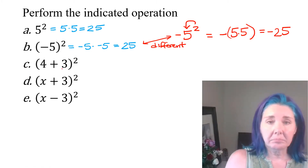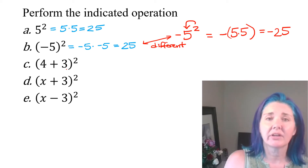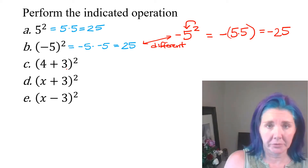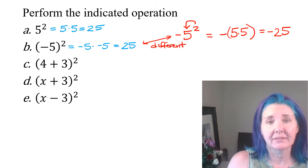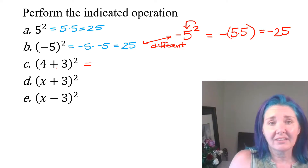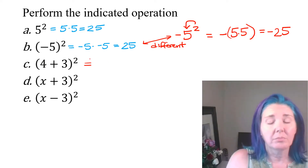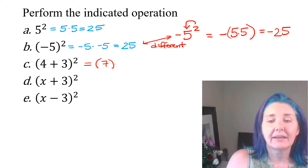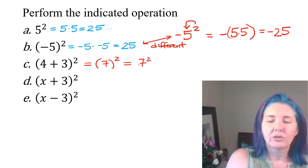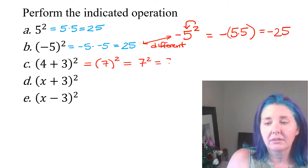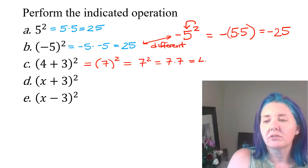All right, now let's look at part C. In part C, the parentheses are acting as a grouping symbol. Whatever's happening inside the parentheses needs to be done first. Inside the parentheses we have addition, so we need to add four and three first before we square. Four plus three is seven, and that's what's being squared. Since there's no negative or anything, I'm going to write it without the parentheses. Seven squared is seven times itself, which is 49.